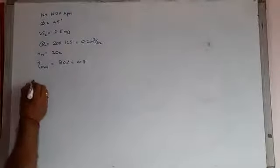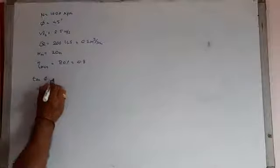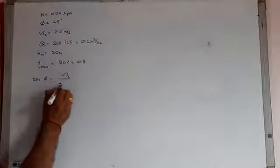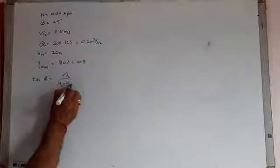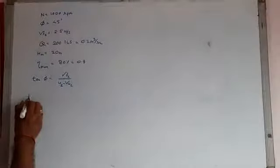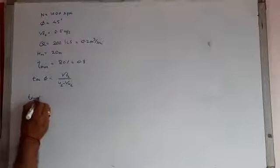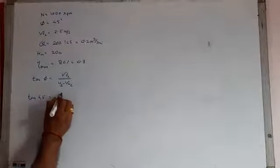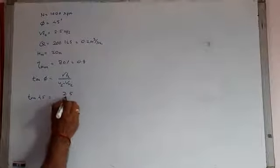From the outlet velocity triangle we have tan phi equal to Vf2 by U2 minus Vw2.